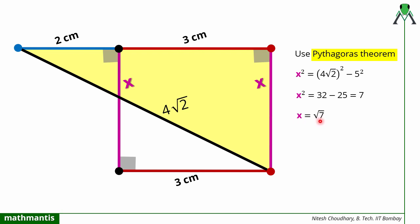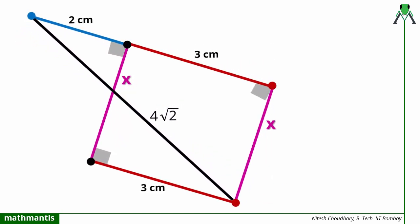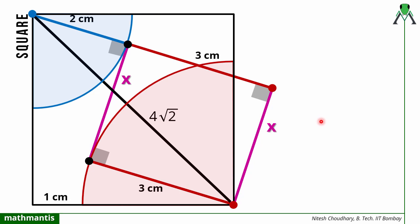Now let me explain the thought process for finding the length of the common tangent. Going back to the original diagram — when finding the length of a common tangent to two circles, you always draw three lines: one line from the center of the first circle perpendicular to the tangent, another line from the center of the second circle perpendicular to the tangent, and then a line joining the centers of the two circles. That is why I drew the diagonal here.